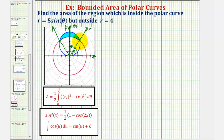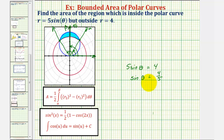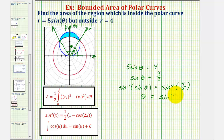We still have to find the angle at the point of intersection for alpha. To find alpha, we set the two equations equal to each other and solve: five sine theta equals four. Dividing both sides by five gives sine theta equals four-fifths. Taking the inverse sine on both sides, theta equals inverse sine of four-fifths.